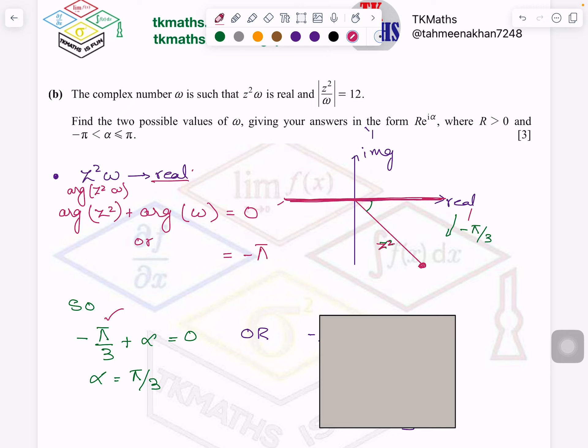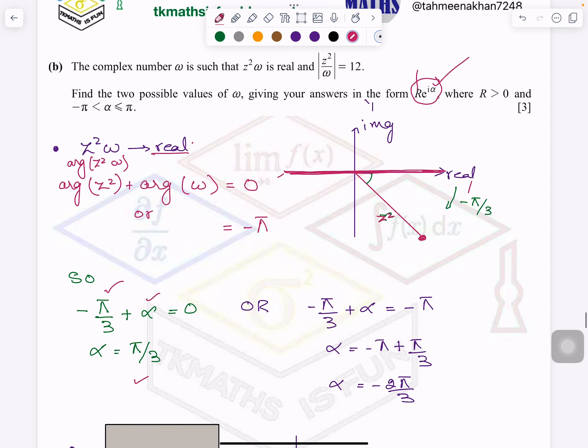So when argument of Z square, I already know from part 1, which was minus π/3, which I have written here. And argument of ω, we are taking α because of this thing given here. This is representing for ω and this is also representing for ω. So this will help me to form an equation and I will get α equals π/3. Or if I take it equals minus π, my other answer will be minus 2π/3.